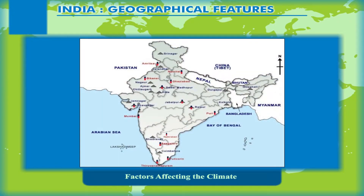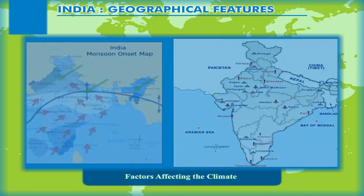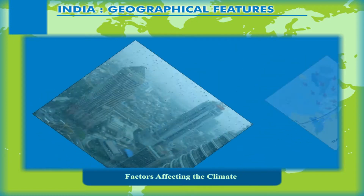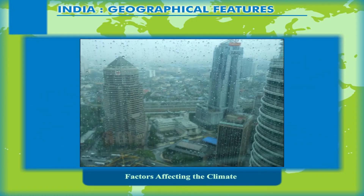The Indian Ocean, the Arabian Sea, and the Bay of Bengal have a moderating influence on the climate of India, especially the coastal regions. These large storehouses of water also provide moisture to the onshore winds and thus are a great source of rainfall to the country.